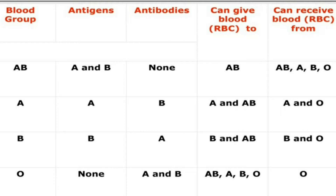Blood group O person can donate blood to A, B, O, and AB. So this blood group is called the universal donor — it can donate blood to all other blood group persons. However, they can receive blood only from blood group O. Blood group AB is called the universal recipient since it can receive blood from a person with any blood group.